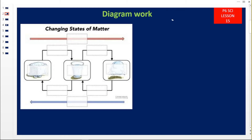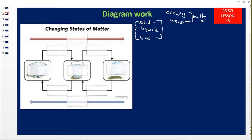Now we are looking at the changes in the states of matter. Matter is anything that has weight and occupies space — it must occupy space and have mass or weight. Matter exists in three states: the solid state, the liquid state, and the gaseous state. Water can exist in all three: water as a solid is ice, as a liquid is water, and as a gas is steam or water vapor. We are going to see the interconversions — solid to liquid, liquid to gas, gas to liquid, gas to solid.